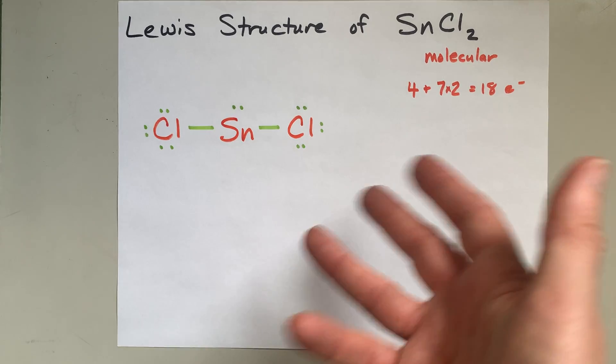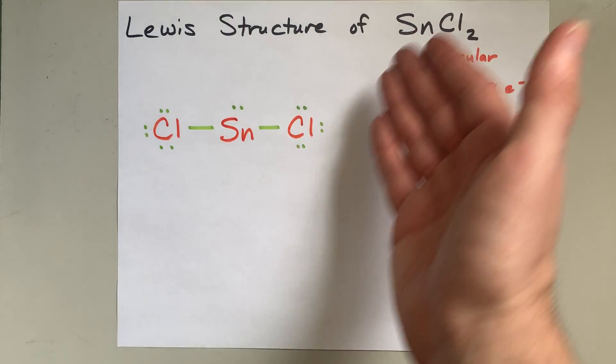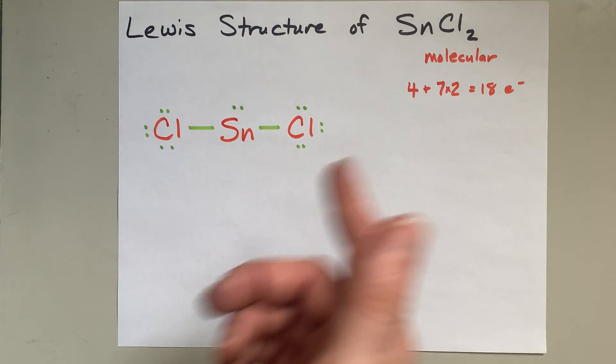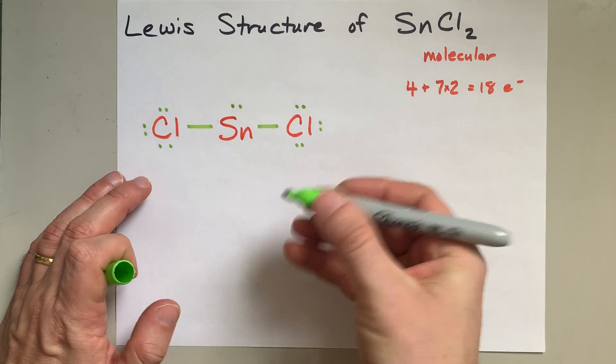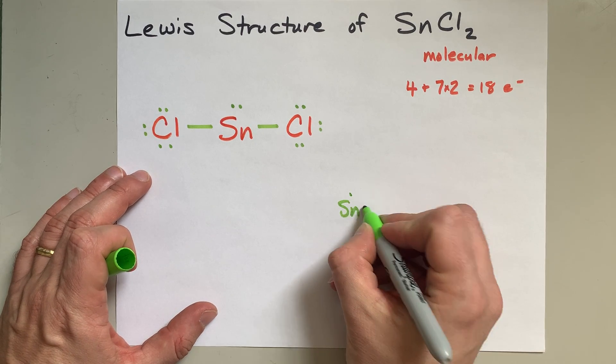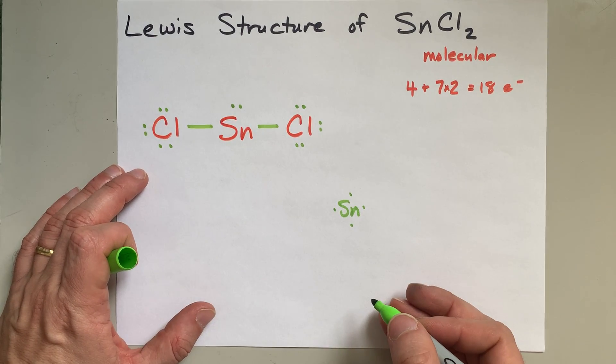If your teacher, for some reason, demands an ionic structure, then what you're going to have to do is start with your Sn with, well, I think it should be one, two, three, four valence electrons.